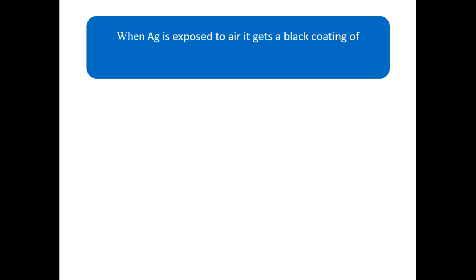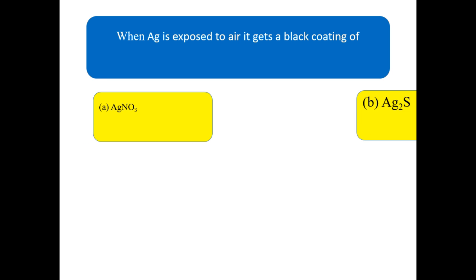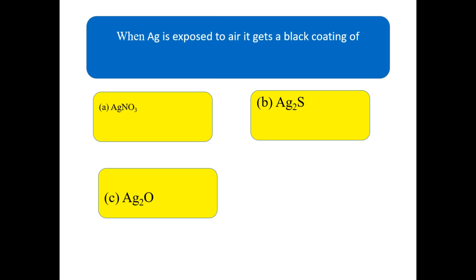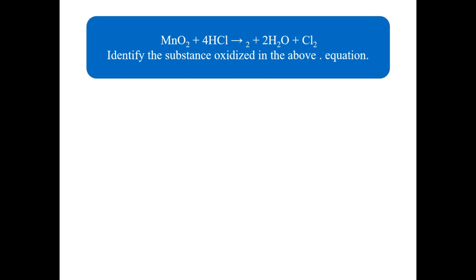When silver (Ag) is exposed to air, it gets a black coating. Identify what this black coating is. Options are: AgNO3, Ag2S, Ag2O, or Ag2CO3. Write down the right answer for this question.